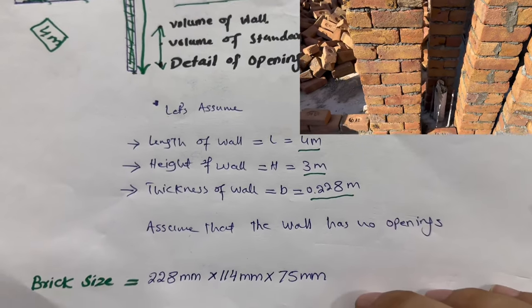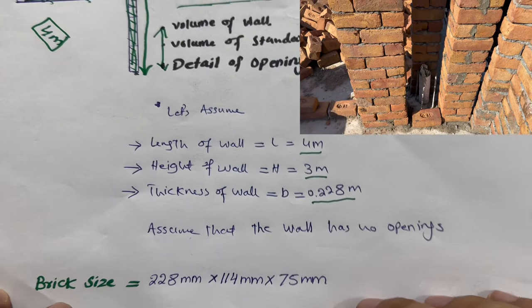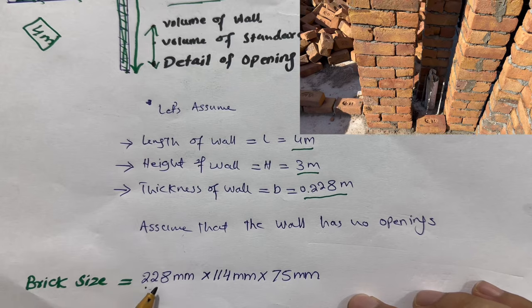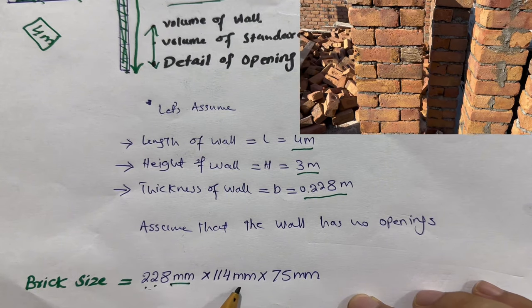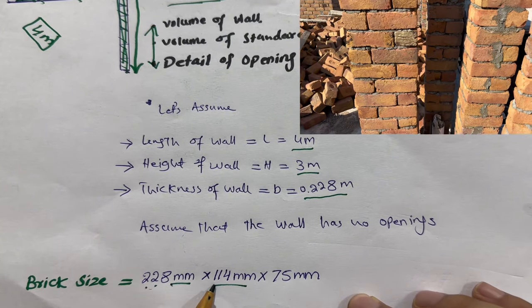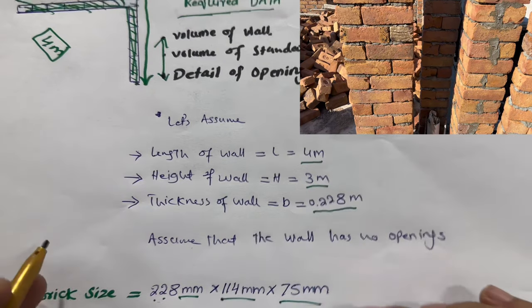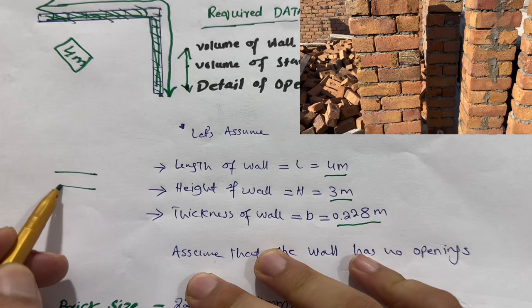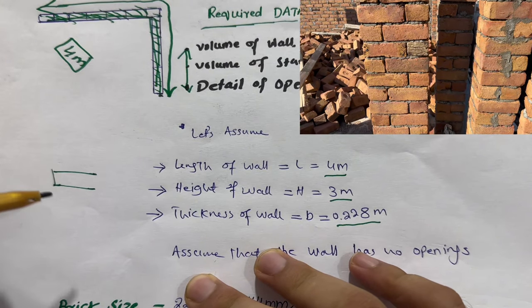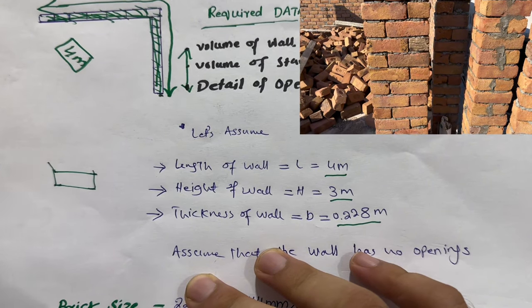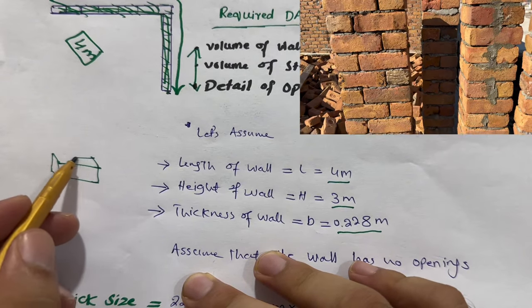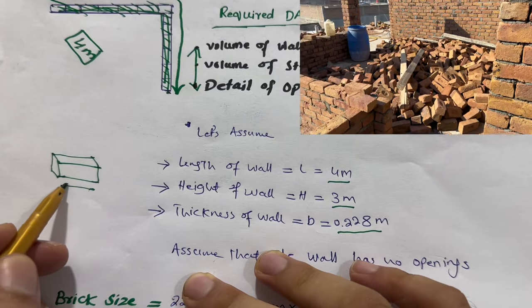Let me find the brick size. The brick size is 228 mm by 114 mm by 75 mm. Let me make its diagram. You can see here, this is the length and this is the thickness and this is the width. So this is a brick which is 228 mm.